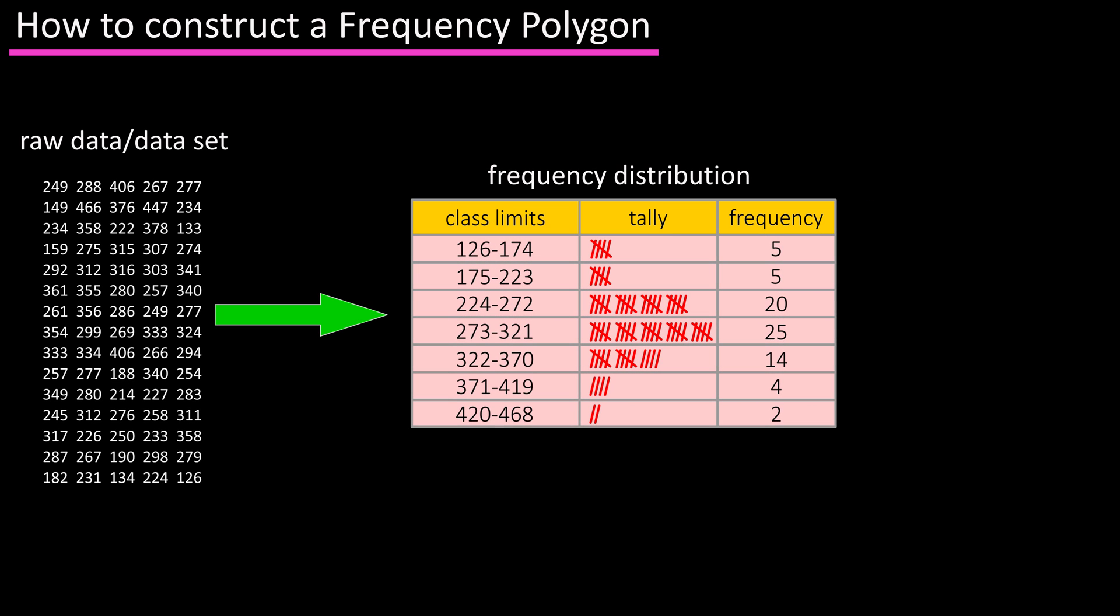In a past video we discussed what a frequency distribution is. Real quick, you have a data set, you break the data down into classes or intervals, you tally up how many data points are in each class, and you write that number down, which is the frequency.